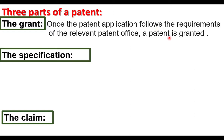The patent will be granted for a new invention only. The necessary requirements have to be fulfilled in the patent application; then only the patent will be granted. That is the grant — the first part of a patent.